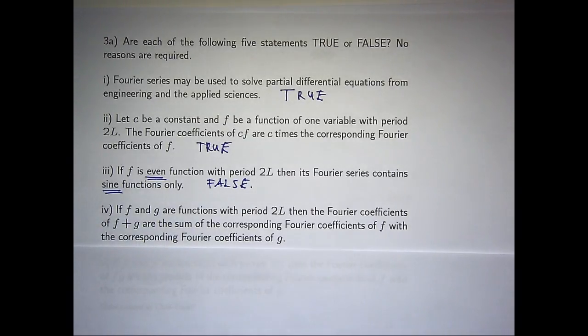Suppose I've got two functions, f and g, and they both have the same period, 2l. The Fourier coefficients of the new function, f plus g, is just the sum of the corresponding coefficients from f. Is it true or is it false? Who thinks it's true? Who thinks it's false? Who's not sure? It's true. Again, it comes back to the basic properties of integrals. Let me show you.